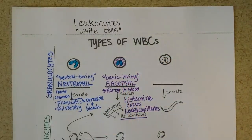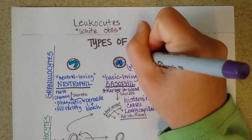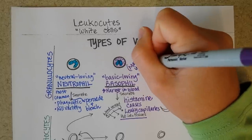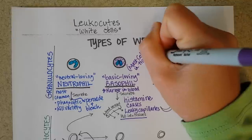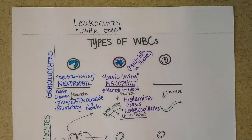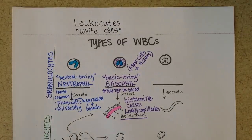Basophils have a counterpart found in the tissues called a mast cell. Even though mast cells don't circulate in the blood, they are definitely a type of white blood cell. They play a really important role in allergies — if you have a lot of activated mast cells in the mucus membranes of your respiratory tract or GI tract, the release of histamine is associated with allergy symptoms. Water comes out of blood vessels more freely when histamine is around, causing inflammation, which can be important in fighting infection but problematic in allergies.